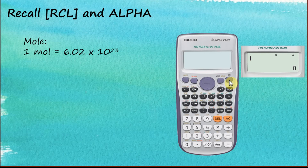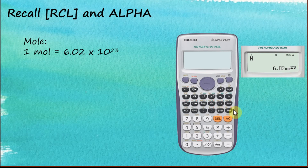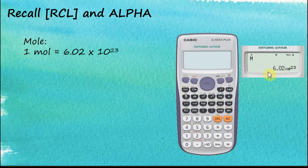Let's say I switch off the calculator and later want to check what number is stored. First switch it back on. I can use the RCL (Recall) button to retrieve the number. Click RCL, then tap the M button, and the calculator immediately shows that the number stored in M is 6.02 × 10²³. I can also use Alpha then M, and press equal, and it will show the same number: 6.02 × 10²³. That's how we retrieve stored numbers.